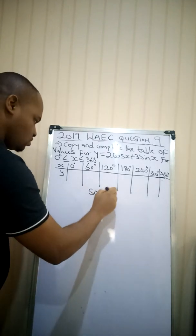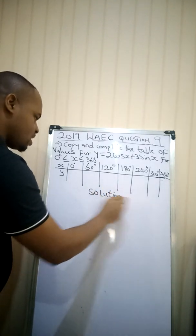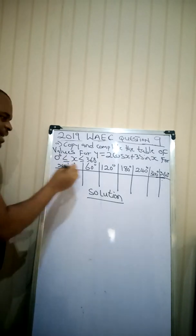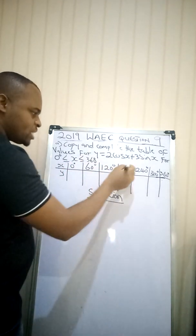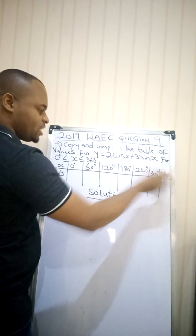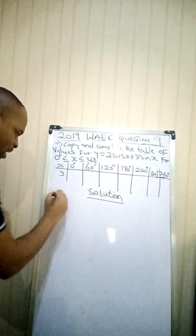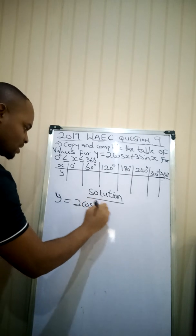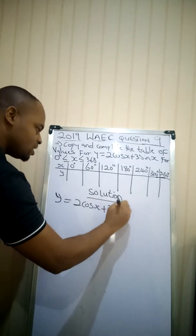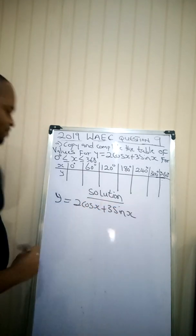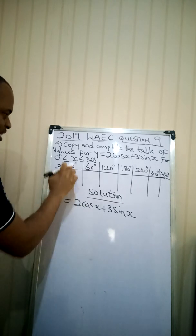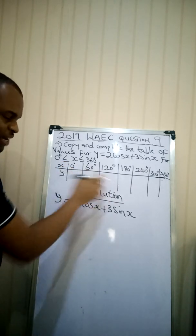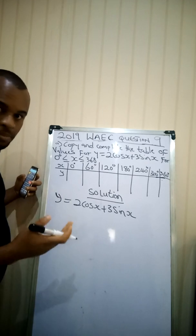Solution. We need to complete this table. We have been given the values for x: 0, 60, 120, 180, 240, 300, 360 degrees. But our y is giving us what? 2cos(x) plus 3sin(x). Now you need to be introducing each of these values of x to get the corresponding value for y. That is how to complete that table.